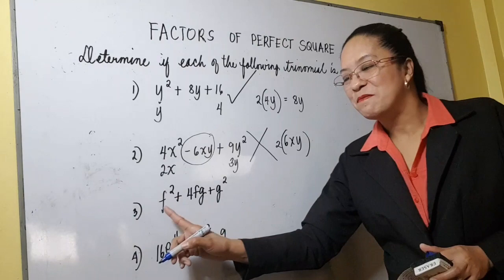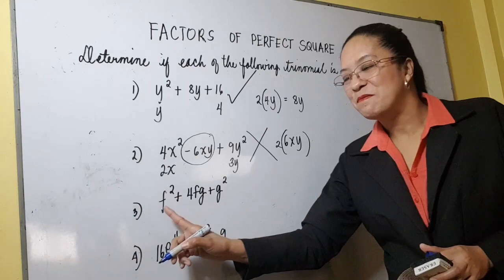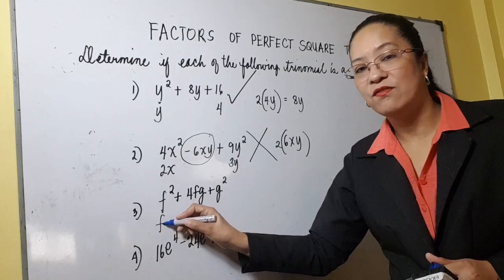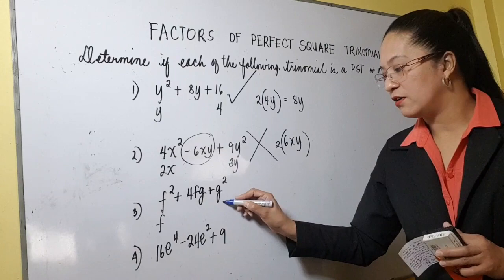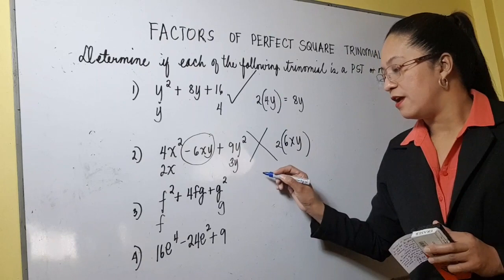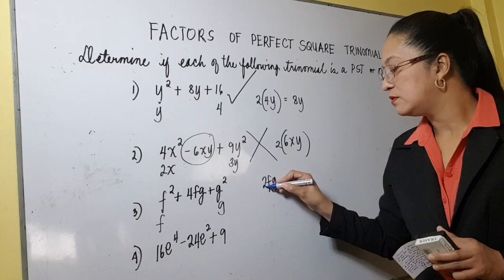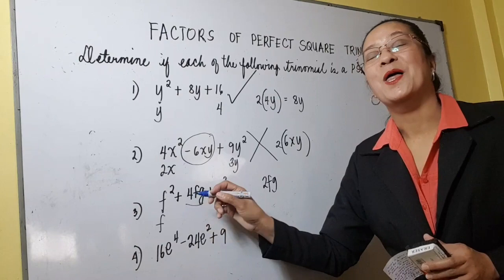How about number 3? Let us see if it is a perfect square trinomial. The square root of f squared is f. The square root of g squared is g. Let us multiply the two square roots: f times g is fg. When you double the product, you get 2fg. Is it the same with your middle term? It is not. So this is not a perfect square trinomial.